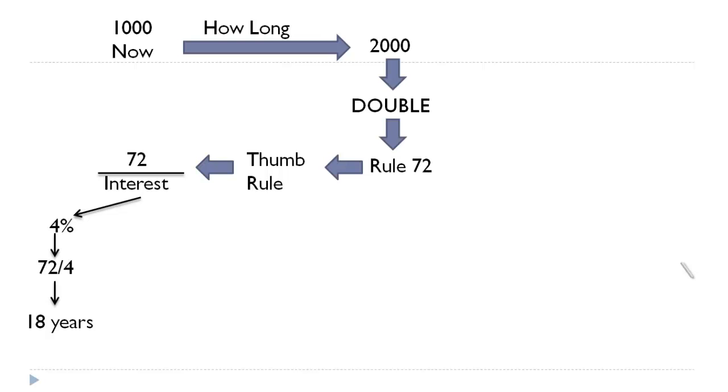Say the rate of interest is 6%, then 72 by 6 is 12 years. And if the rate of interest is 8%, it would take 72 by 8, which is 9 years.